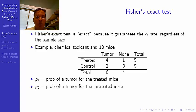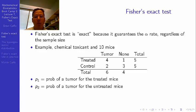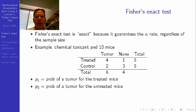Fisher's Exact Test, in contrast, guarantees the 5% limit provided the IID assumptions are met for each of the two groups. The background on Fisher's Exact Test is the famous example of the so-called 'lady tasting tea.' Fisher was at a party and there was a wager about whether a lady could determine whether cream or milk had been put in first into her tea.